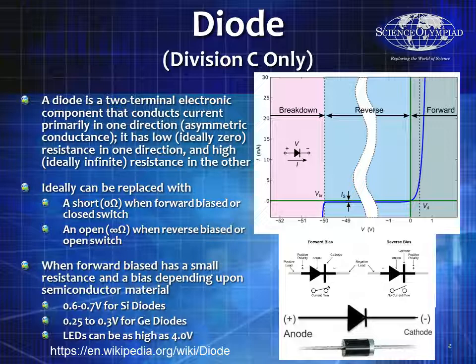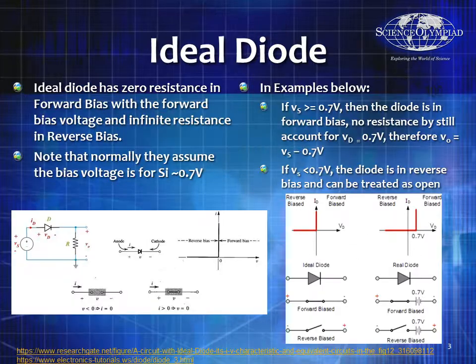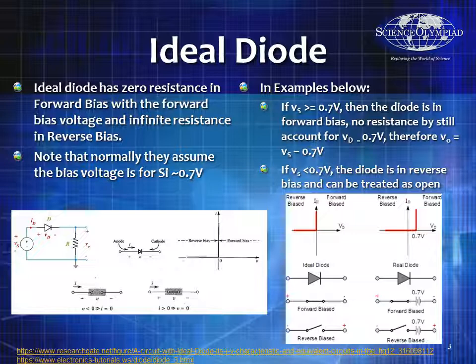We also talked about how you can figure out the forward bias voltage depending upon what type of material the diode is made of. We talked about ways to draw the current versus voltage curves for an ideal diode, and then how to approximate a real diode by either putting in a forward biased resistor and/or the forward bias resistance, which is usually going to be very small.